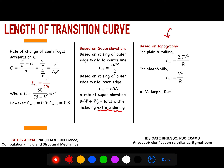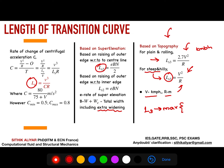The third formula is based on topography. IRC has given directly: for plain terrain, Ls3 = 2.7V²/R, and for steep and hilly terrain, Ls3 = V²/R, where V is in km/h and R is in meters. Now you have Ls1, Ls2, and Ls3, and the design length Ls is the maximum of these three values.